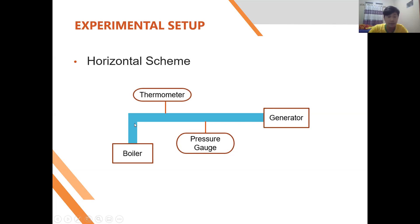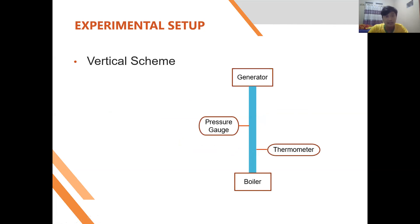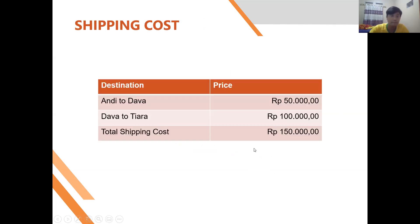The next is the vertical scheme for the experimental setup. The components are still the same — boiler, thermometer, pressure gauge, and generator — but the difference is that we replace the elbow pipe with a straight connection pipe. The next topic is the shipping cost, which is explained in the table below.